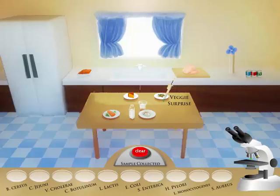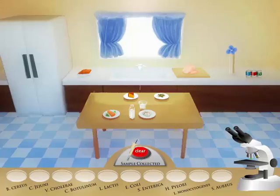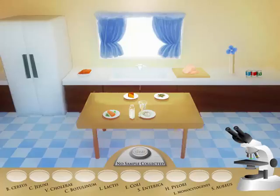If you've selected a location containing bacteria, the pipette icon will fill up and the word 'sample collected' will appear on the lab table. Note that if you would like to clear the pipette, you can click on the clear button. This will empty the pipette and allow you to sample another location.